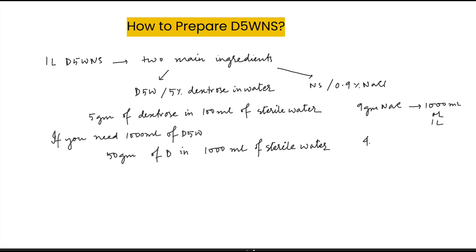If you prepare 500 ml of normal saline, you need to add 4.5 grams of NaCl and dissolve it in 500 ml of water.